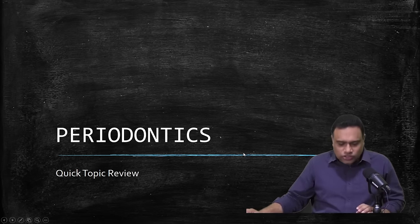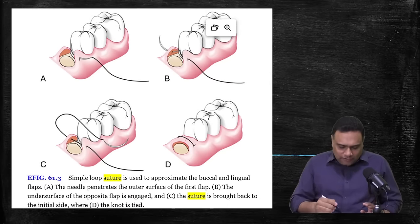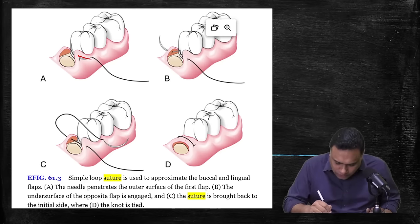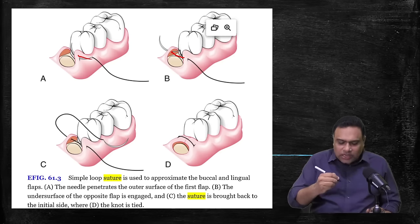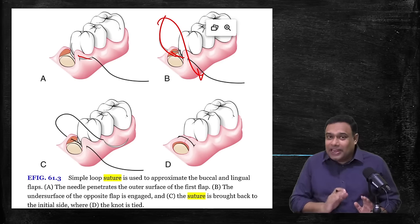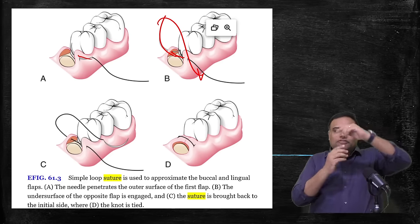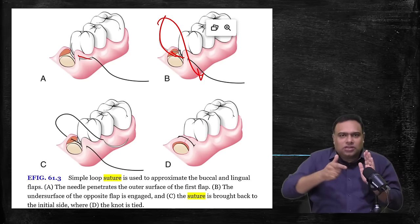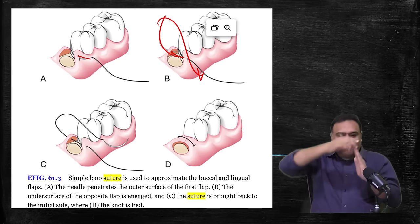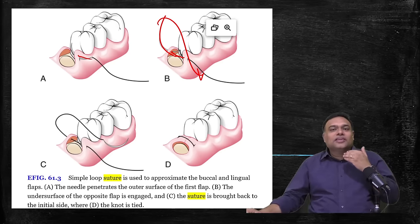We'll start with sutures. The most basic is the simple loop suture. We enter with the needle from the buccal aspect, then from below the flap itself, taking it through to the lingual side and then giving a suture. It looks simple schematically, but in reality you take the needle from the buccal, it turns — it's a 3/8 needle — comes out, and then you hold the lingual flap and insert from inside. It's not as simple as it appears.